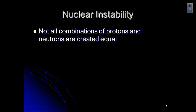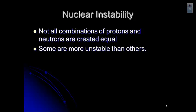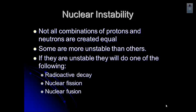All right, so let's talk about what happens in the nucleus. Not all combinations of protons and neutrons are created equal. They're not all really stable. And so what happens is some are more unstable. And when that happens, they'll do one of the following things. They can either undergo what's called radioactive decay. They can also undergo nuclear fission or nuclear fusion.